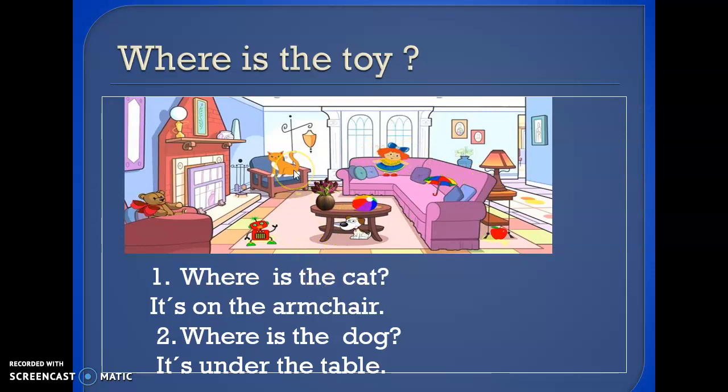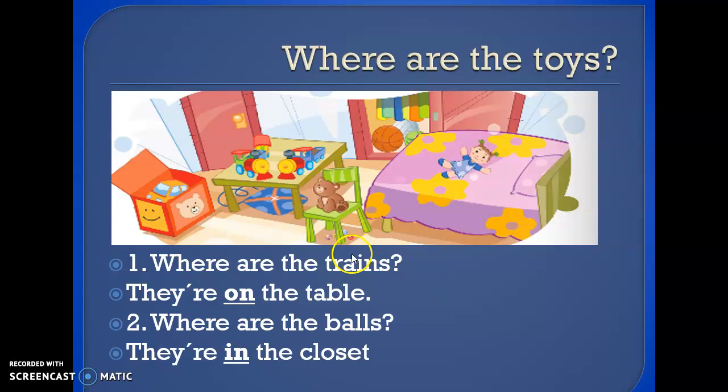Okay, here we go. Where is the cat? It's on the armchair. Where is the dog? It's under the table. Okay, where are the trains? They are on the table. Where are the balls? They are in the closet.